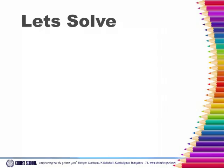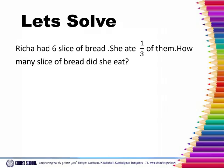Let us solve. Richa had 6 slices of bread. She ate 1 by 3 of them. How many slices of bread did she eat? Now how many slices of bread are there? Six. Let's take six slices now.